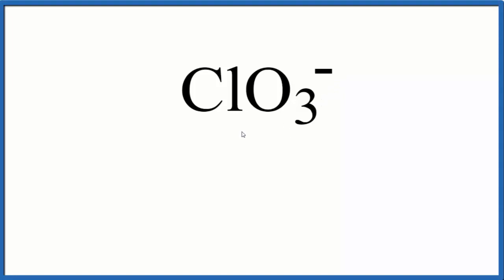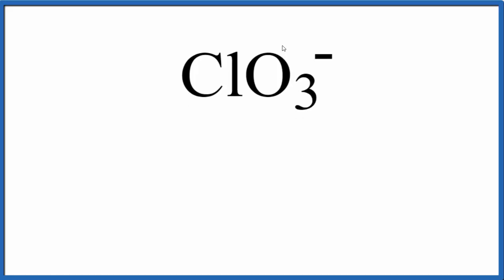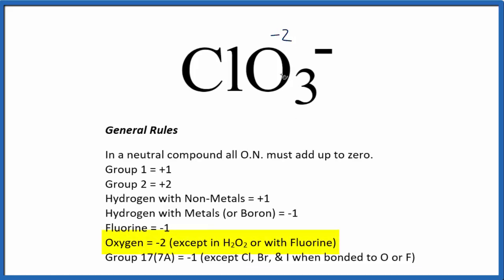If we add the oxidation numbers up for each element, we have three oxygens and the chlorine, all those oxidation numbers, they're going to add up to be a minus one. We also know that oxygen is normally a minus two. So what we're trying to find is the chlorine here.